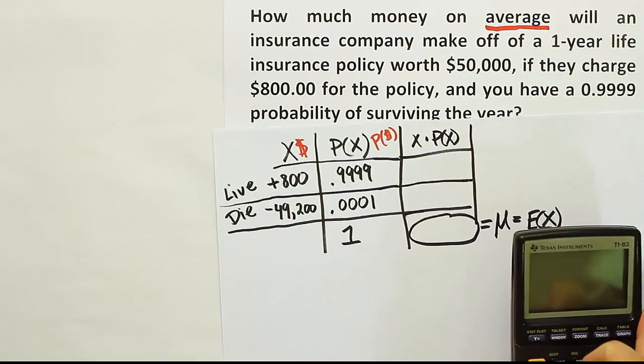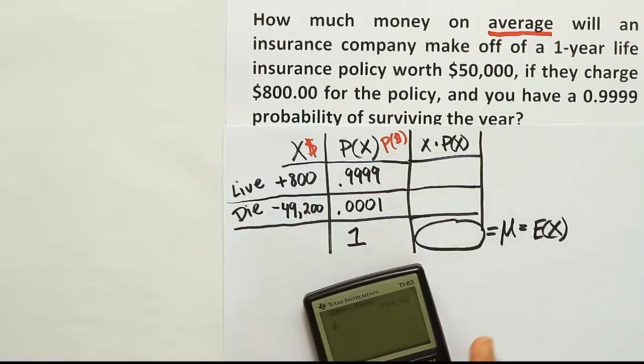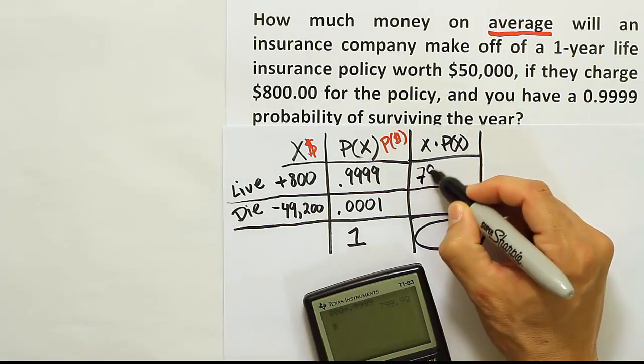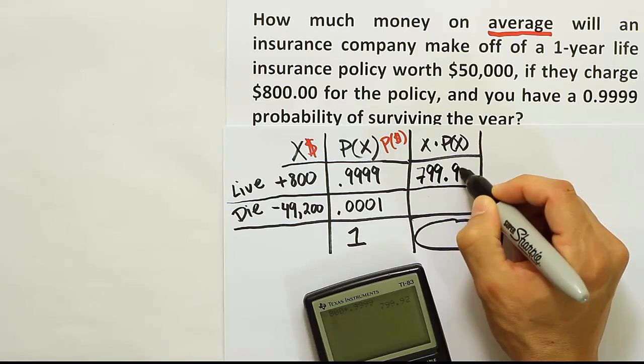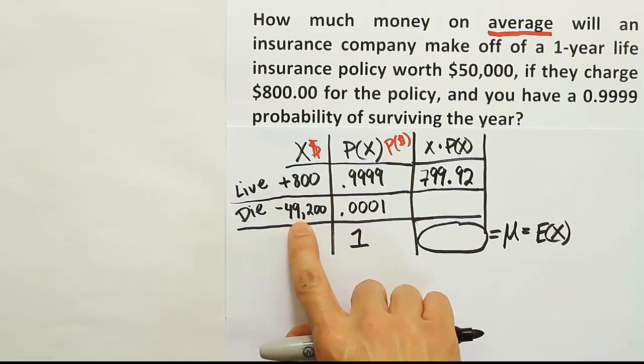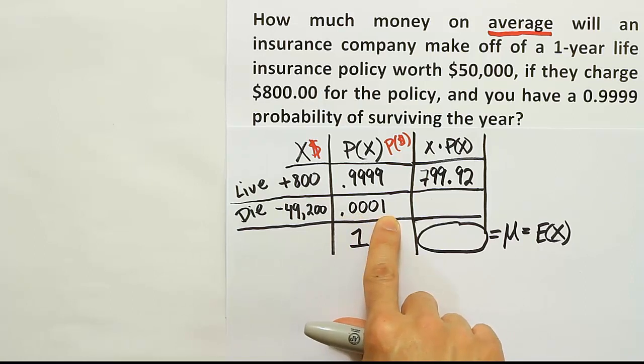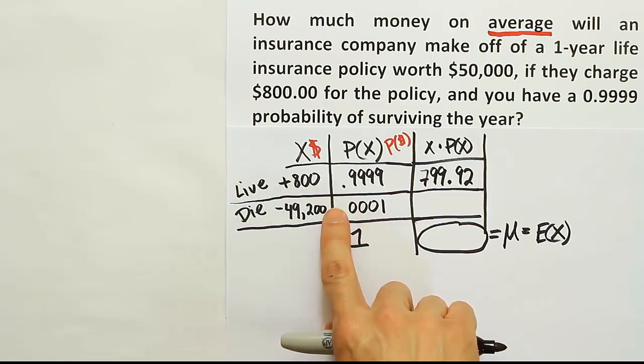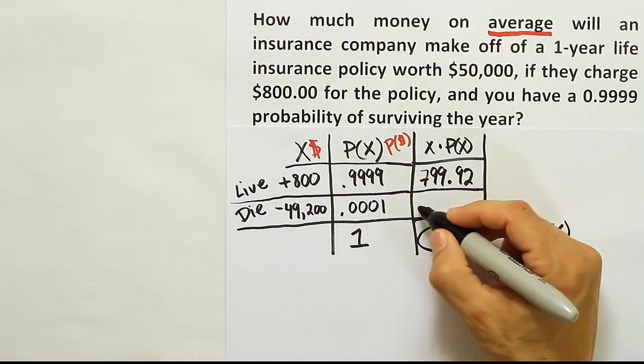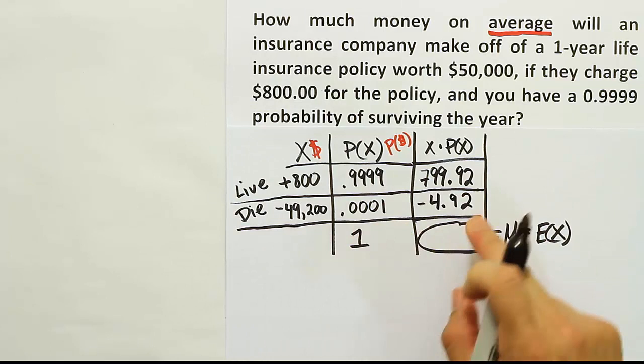So let's multiply 800 times 0.9999 and see what we get. So if I do that, we're going to have 800 times 0.9999. We end up with 799.92. So 799.92. Alright, from there, what we want to do next is to multiply negative 49,200 by 0.001. Now actually, this is the same as dividing by 10,000. So you can just move the decimal point over four places. One, two, three, four. And you'll end up with negative 4.92.